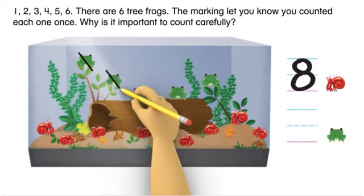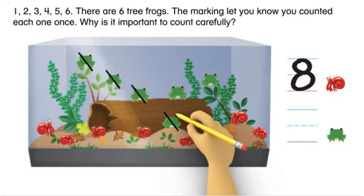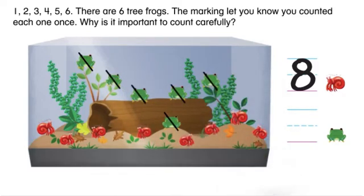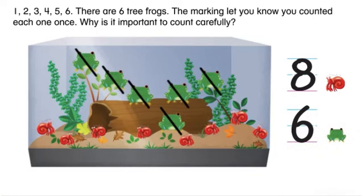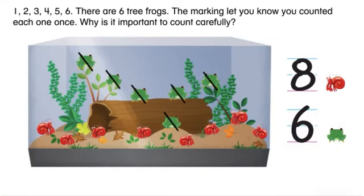One, two, three, four, five, six. There are six tree frogs. The marking let you know you counted each one once.